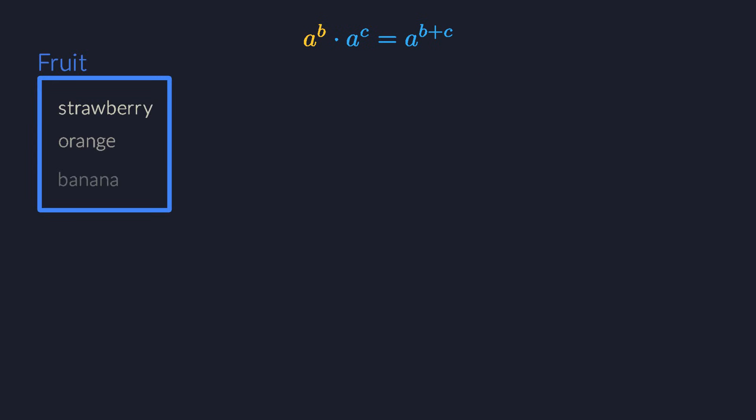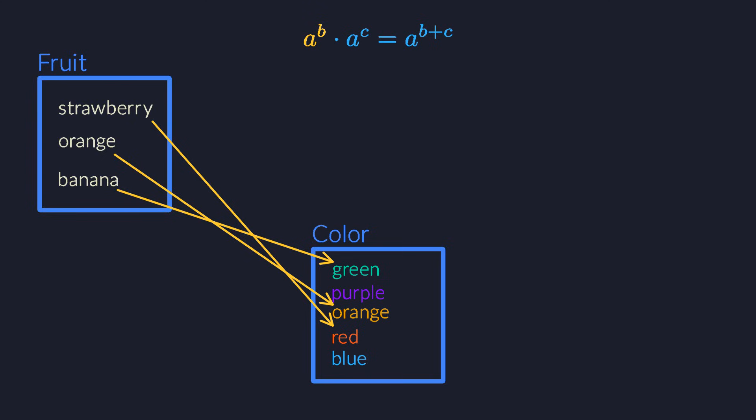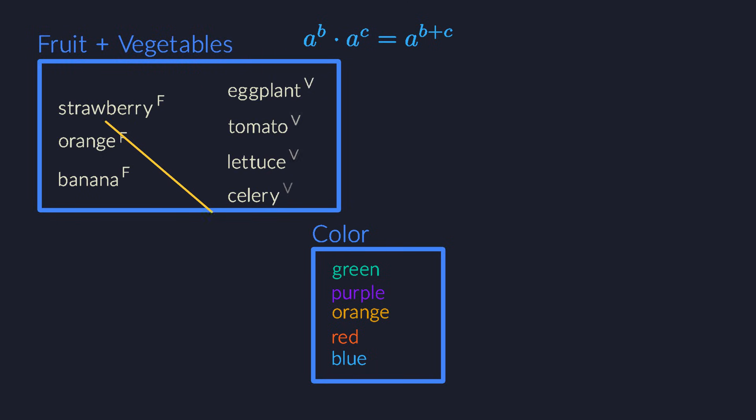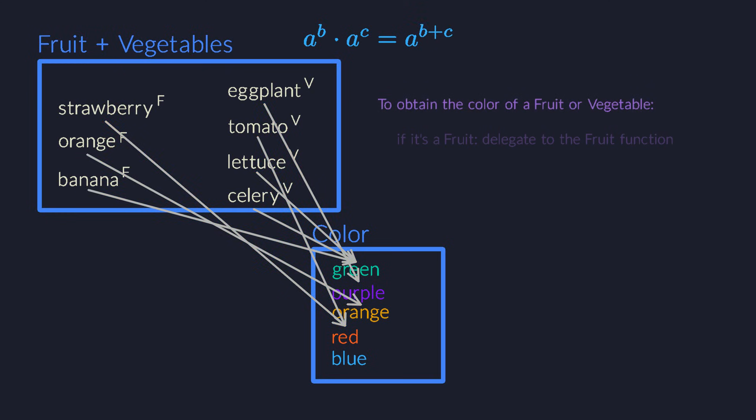To make this more concrete, let's imagine that one of the functions gives us the color of a piece of fruit, and the other one gives us the color of a vegetable. The equation now tells us that we can represent such a pair of functions as a single function that gives us the color for a fruit or a vegetable. The sum type contains the disjoint union of the three fruits and the four vegetables. So our new function receives either a fruit or a vegetable. It doesn't know in advance what it will get.